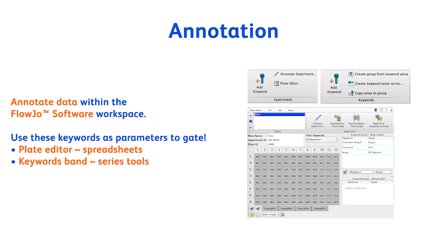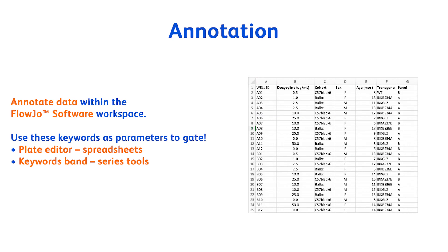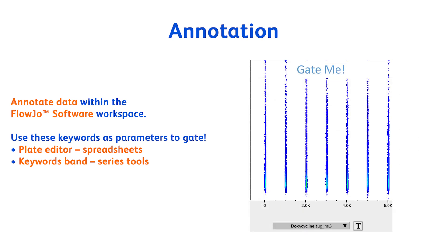Now that our samples are QC'd and compensated, we want to annotate them. We will annotate our samples using keywords. Keywords are metadata within your FCS file that allow the description of each sample — for example, stimulation, tissue, time point, etc. This step is optional, but it results in great efficiency downstream, allowing you to cross-compare different experimental variables rapidly.